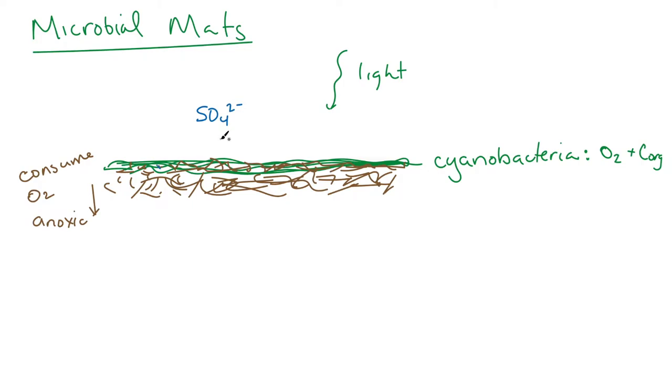Most sulfate reduction can't happen in the presence of oxygen, but the microbial mats make these microenvironments within them that are anoxic, so you do end up with some sulfate reduction associated with the cyanobacteria and also deeper down in the mats.